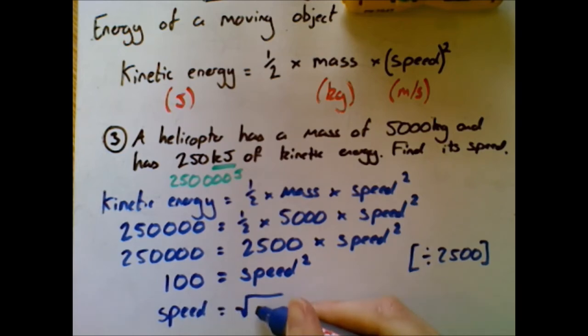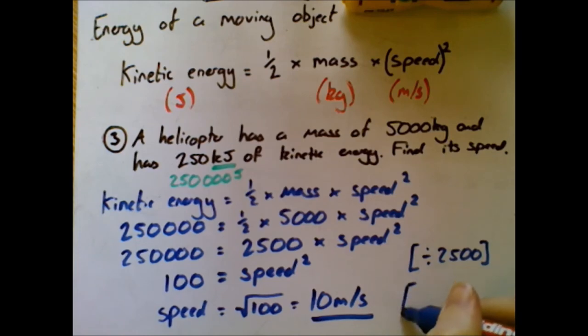Right, 100 equals speed squared. All right, so therefore to find the actual speed, I need to do the square root of 100, which is of course 10 meters per second. And again, if you want to show what you've done, what have we done there? Well we've square rooted. So that is a little bit more complicated because you've got the square in there, but I just wanted to show you an example.